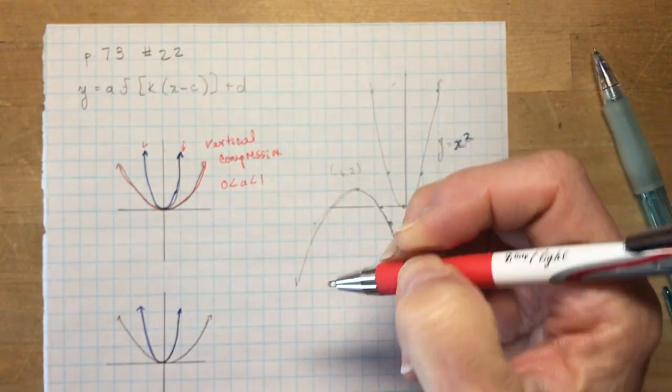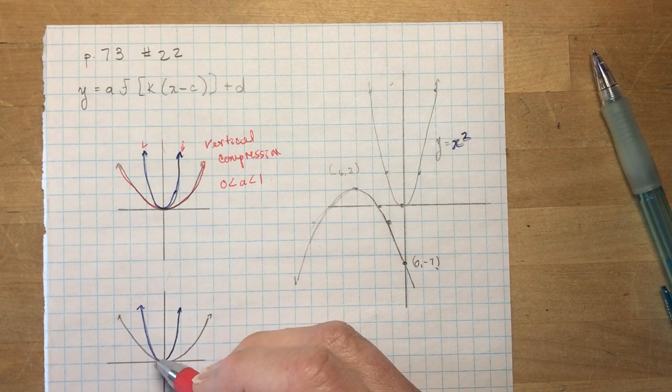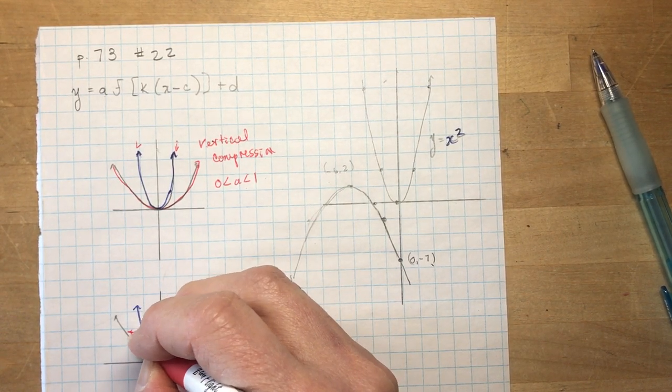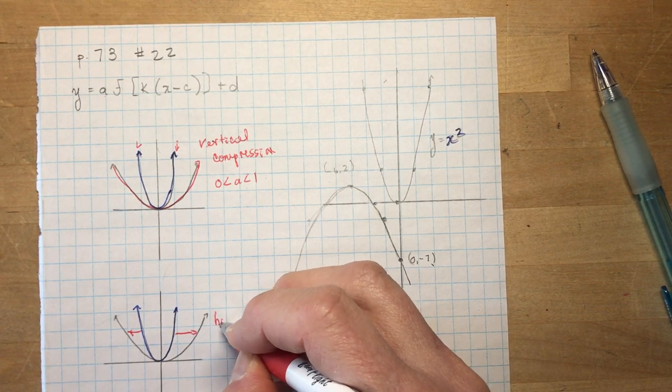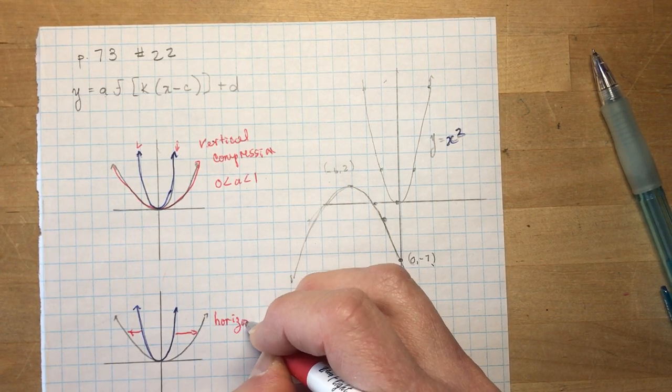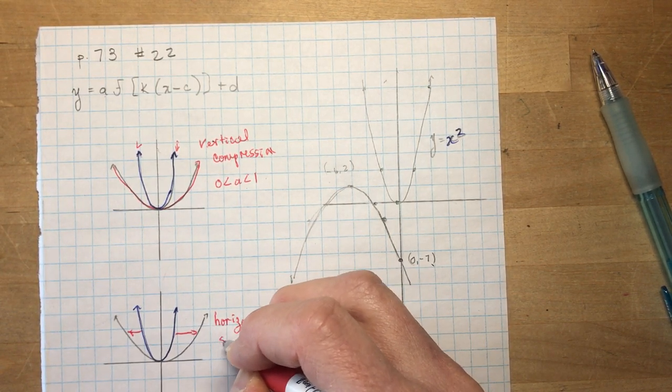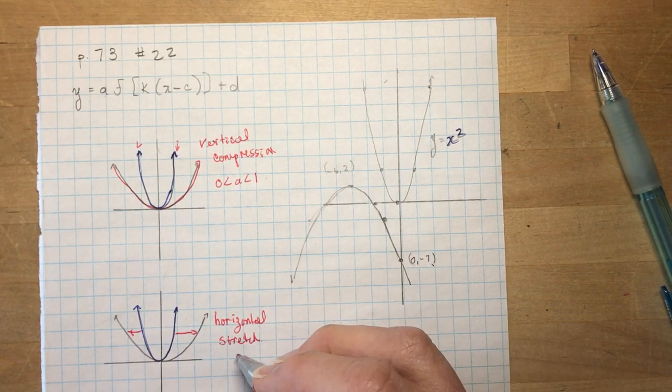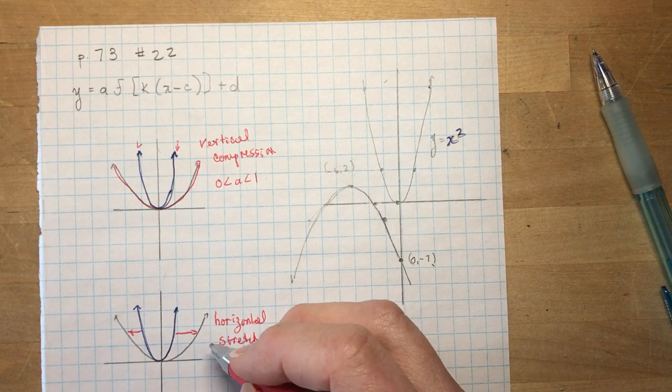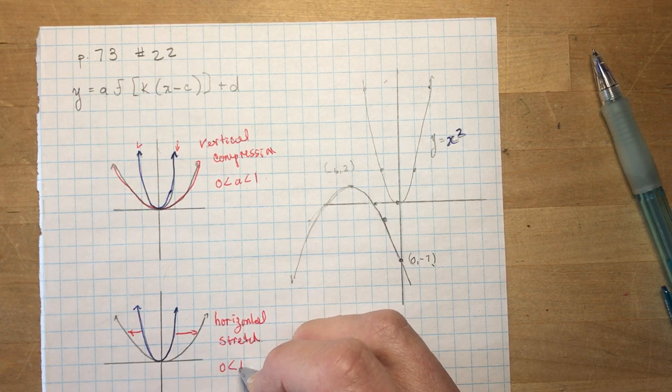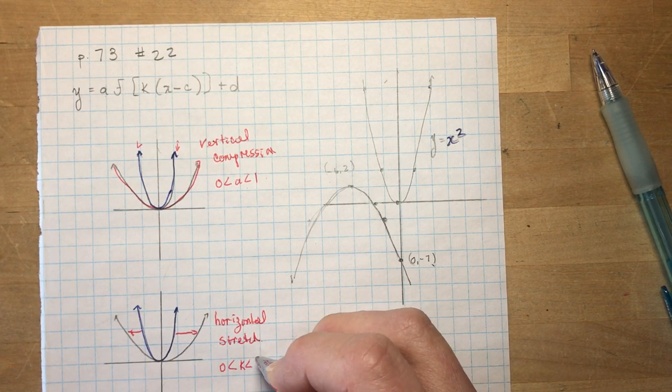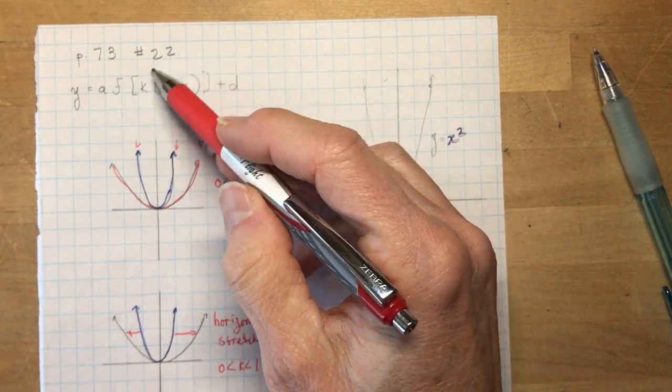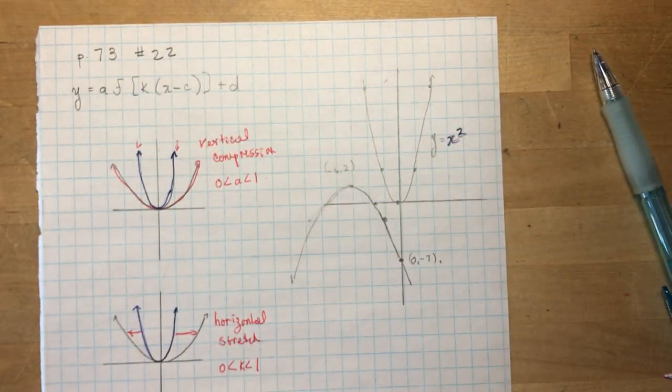This would be a vertical compression and that means that my a value is going to be between 0 and 1. If I take the graph y equals x squared and I pull it this way, I'm horizontally stretching the graph. Horizontal stretch, those values are for k and k is going to be between 0 and 1 as well. Because when you figure out the mapping rule, it's 1 over k.